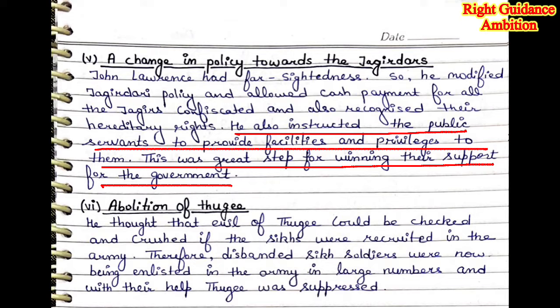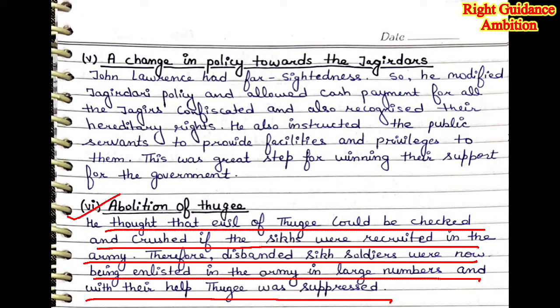Sixth point: Abolition of Thuggee. John Lawrence thought that the evil of thuggee could be checked and crushed if Sikhs were recruited in the army. Since the Sikh army had been disbanded during the Board of Administration period, John Lawrence reenlisted Sikh soldiers in the army in large numbers, and with their help, thuggee and robbery were suppressed.